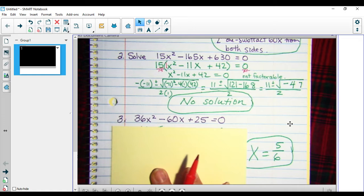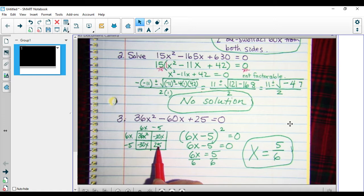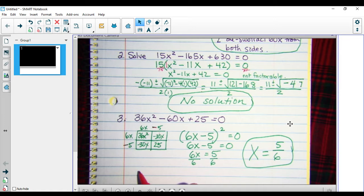I put in my 36x squared, my 25, 6x and 6x, 5 and 5. I need to get negative 30 on each one of those, so I'm going to make them negative.